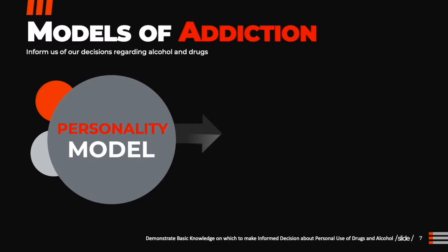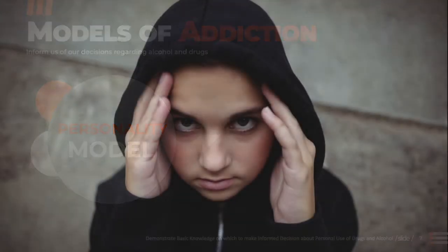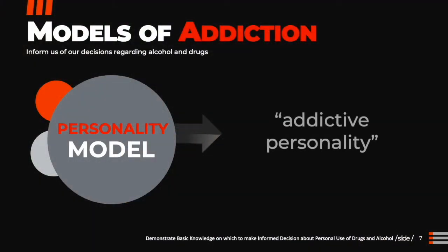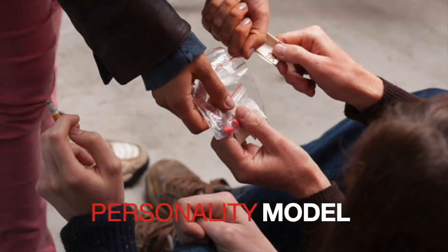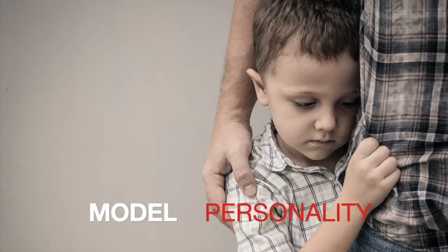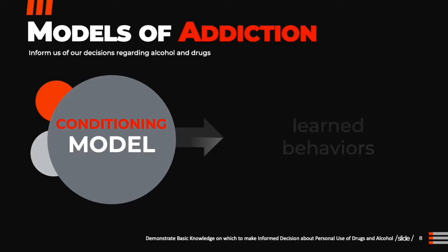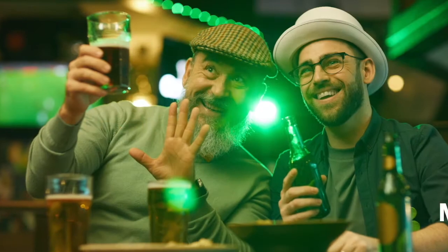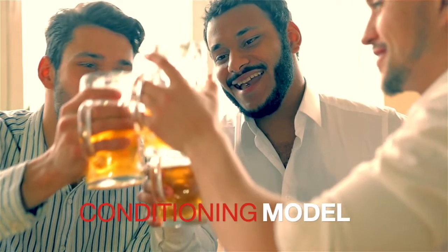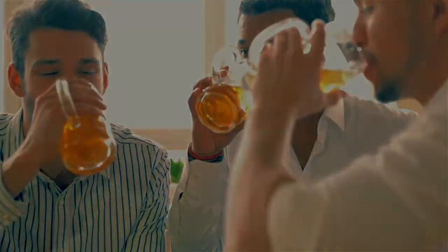The personality model is based on the thought that personality abnormalities primarily cause a substance use disorder. If an individual misuses a substance, they must have an addictive personality. They would be viewed as having inadequate defense mechanisms to unresolved conflicts regarding dependence and early psychological development. The conditioning model believes that alcohol and drug use are learned behaviors. If an individual using a substance leads to rewarding behaviors, then the user will continue, and the conditioned response and reinforcement create the problematic behavior.